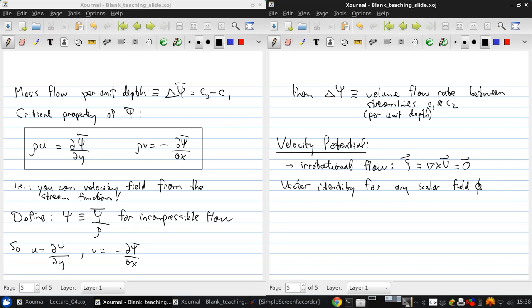If we have for any scalar field phi, grad cross grad phi equals 0. This identity looks a lot like this equation for irrotational flow. In particular, if we replace velocity with grad phi, then what we have is exactly the same equation. So we can say in an irrotational flow, the velocity vector equals grad phi. And we define this value phi as being the velocity potential.